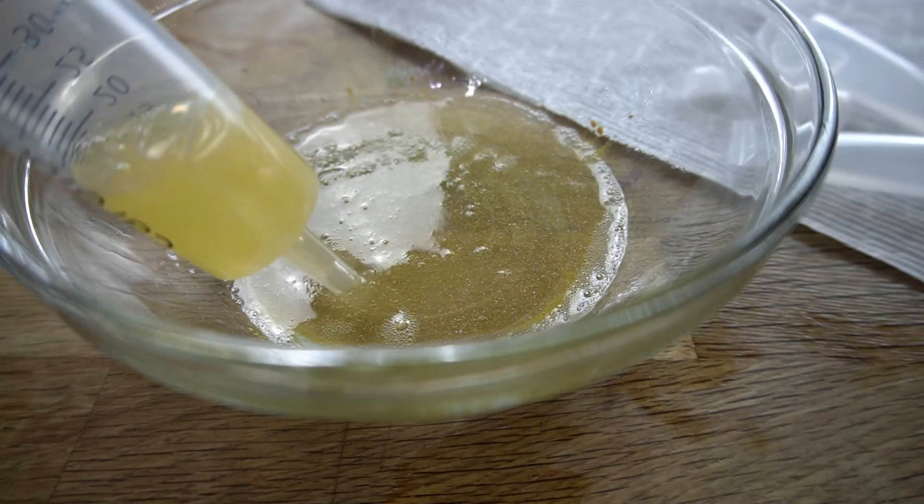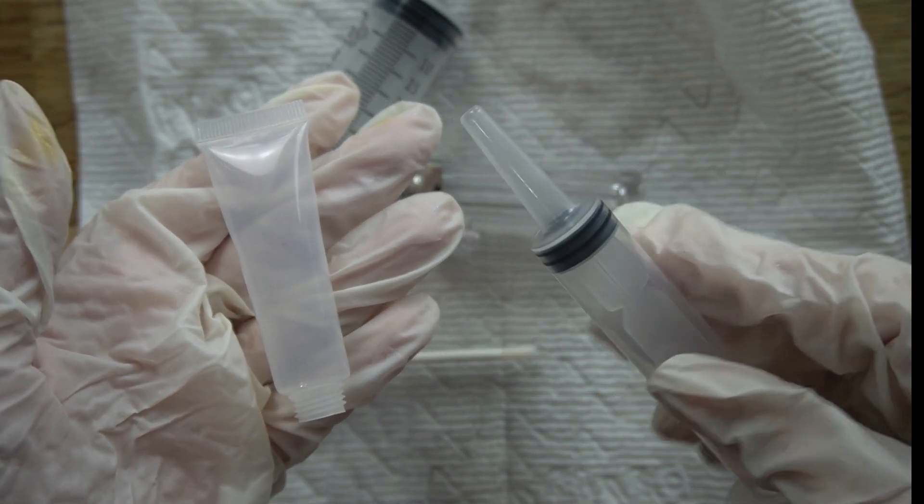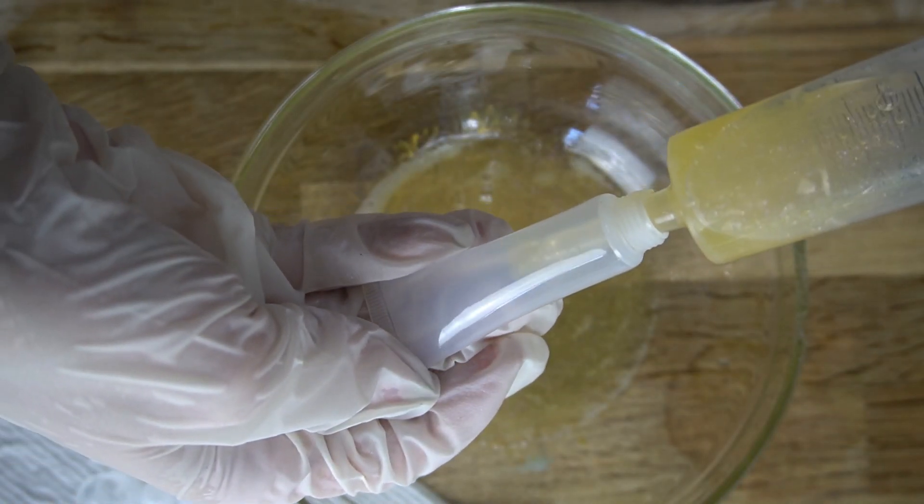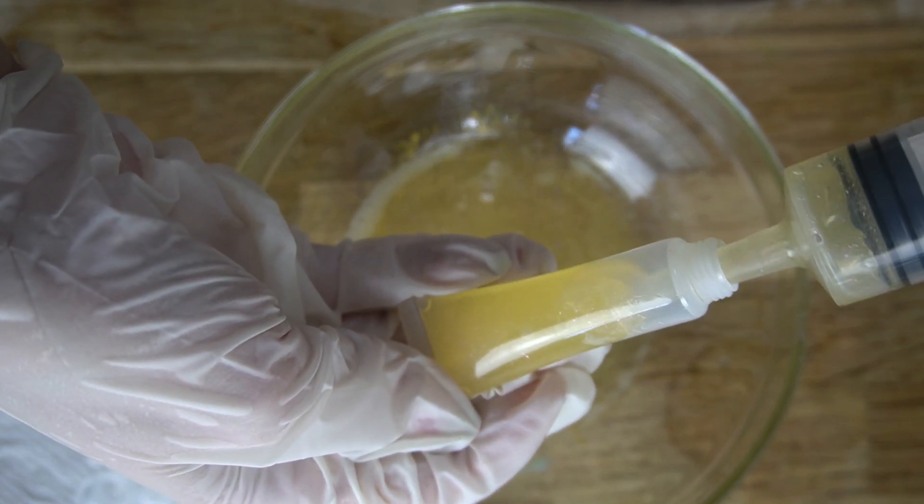So if you're filling a 15 milliliter tube, the one that you see in my hand here, this works very nicely. Just pull the tip all the way to the bottom of the tube and fill it from the bottom going up. And this keeps everything nice and clean.